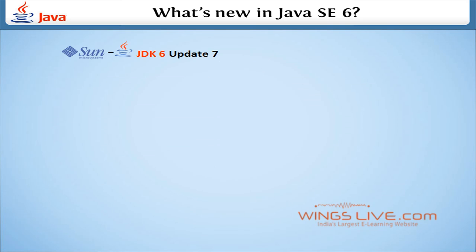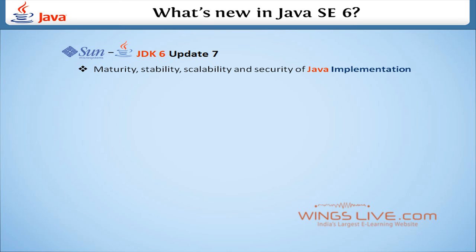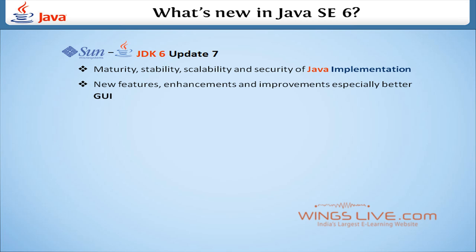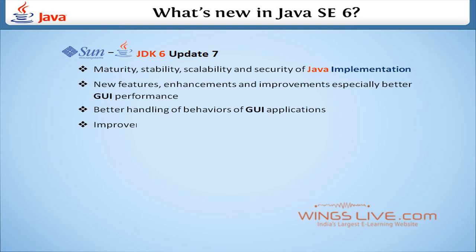Sun recently released JDK 6 Update 7, which has a greater level of maturity, stability, scalability, and security of Java implementation. Java SE 6 has many new features, enhancements, and improvements, especially better GUI performance and better handling of behaviors of GUI applications, plus improvements and new features in server-side core and Java core.